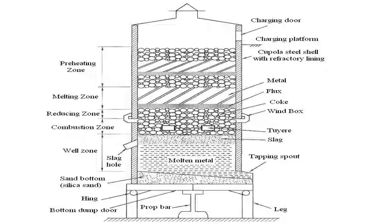The combustion zone lies between the top surface of the slag and the bottom portion of the tuyeres. Above that is the reducing zone. The melting zone starts at the top surface of the flux material up to the next coke layer, where cast iron is melted. The remaining upper portion is the preheating zone. These five zones are: preheating zone, melting zone, reducing zone, combustion zone, and well zone.